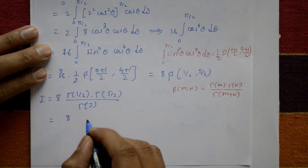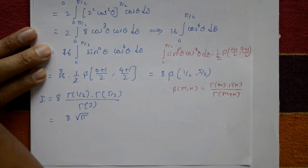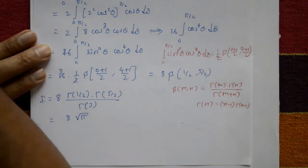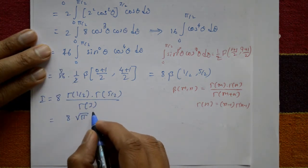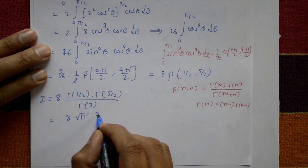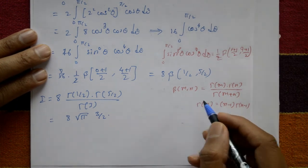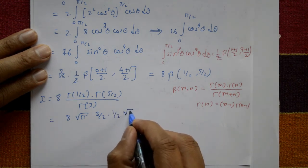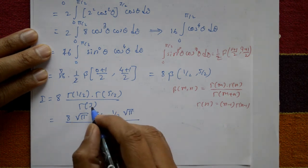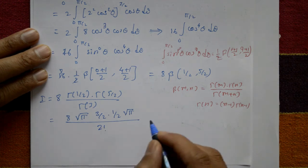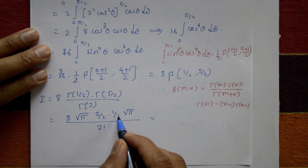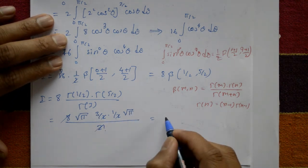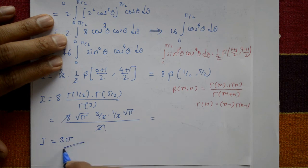Now gamma(1/2) equals root pi. Using the reduction formula gamma(n) equals (n minus 1) times gamma(n minus 1), we get gamma(5/2) equals 3/2 times gamma(3/2), and gamma(3/2) equals 1/2 times gamma(1/2) equals 1/2 times root pi. Also gamma(3) equals 2. After cancellation, I equals 3 pi. This is the required solution.